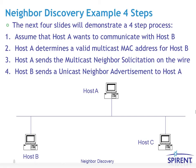For the four steps, assume host A wants to communicate with host B. Step two: host A needs to determine a valid multicast MAC address for host B — a MAC address that host B is listening to, rather than sending to broadcast as was the case with ARP in IPv4. Step three: host A sends a multicast neighbor solicitation on the wire, and theoretically only host B will be listening to that address. Step four: host B sends a unicast neighbor advertisement to host A.